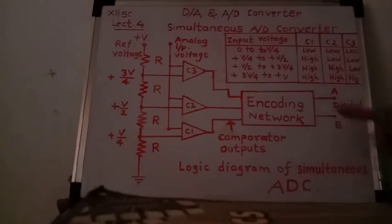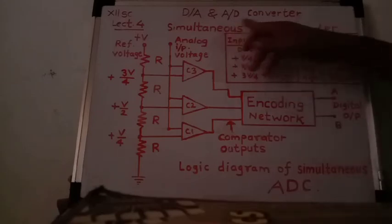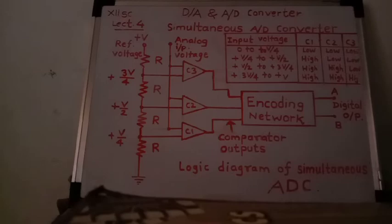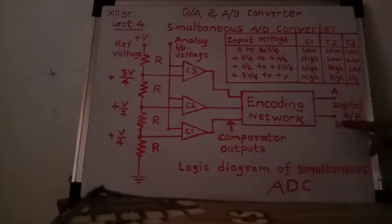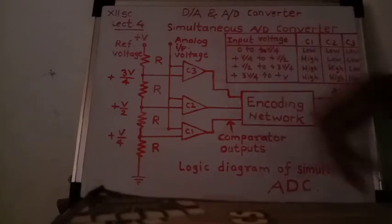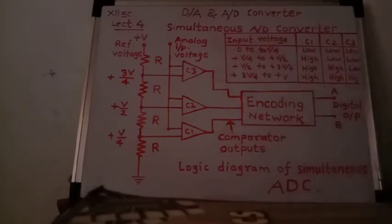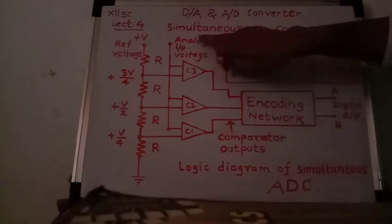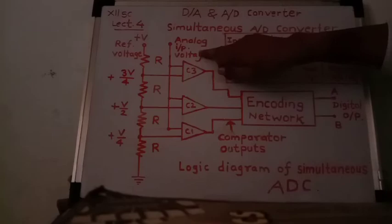For a 3-bit simultaneous ADC, seven comparators are required because 2^3 − 1 = 8 − 1 = 7. The analog input voltage ranges between 0 and +V.